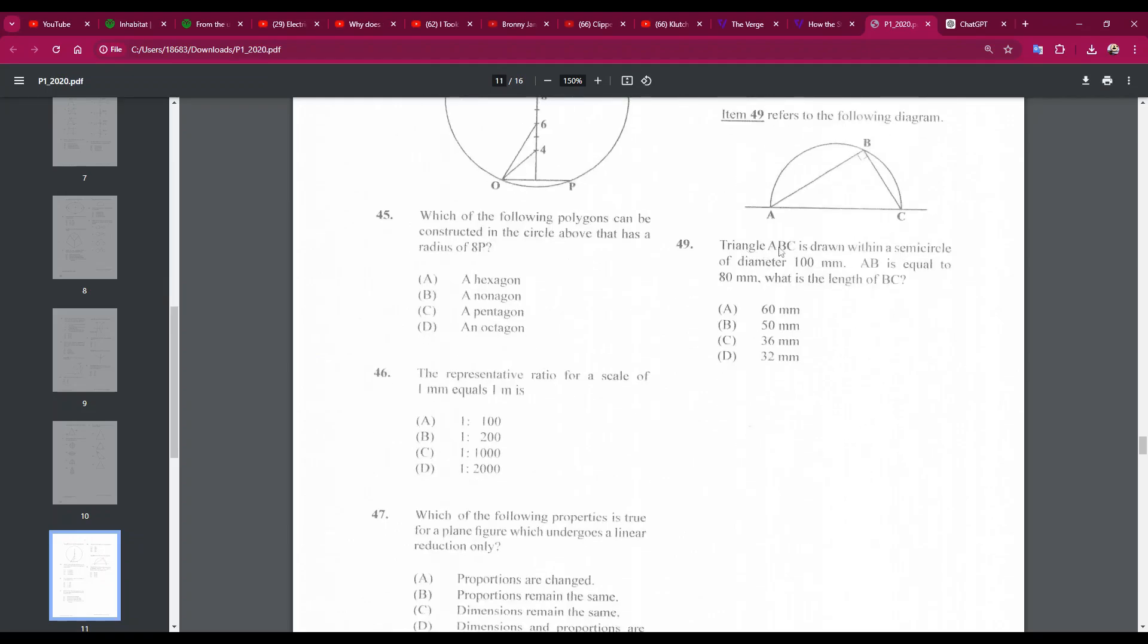Number 49: triangle ABC is drawn within a semicircle of diameter 100. So this is the diameter of the circle. It's also the hypotenuse of the triangle. AB is equal to 80. This is AB. What is the length of BC? So this other side will be 60. I did the math. Yeah, it's trigonometry. So number 49A, 60.